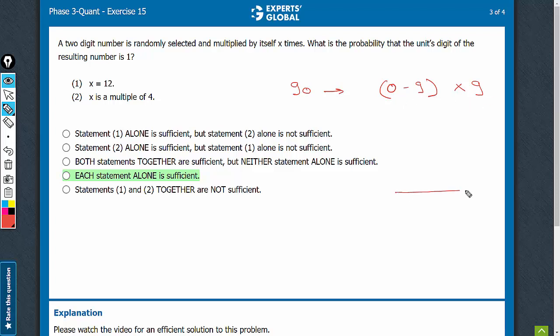So total, there are 90 two-digit numbers. That becomes the denominator. Numerator: whatever the number is, let us say it is m, then m raised to power x leads to 1 on the unit place.